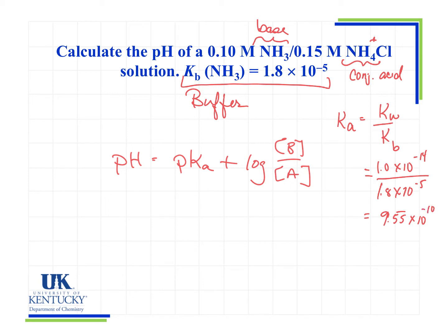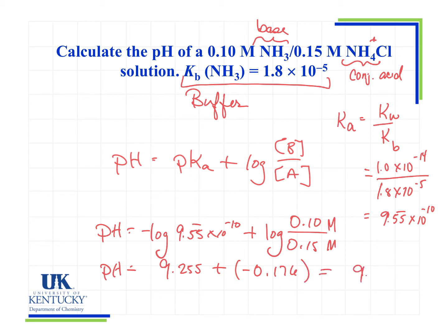There's the Ka. So now we're ready to calculate the pH. pH is pKa. That would be the negative log of that 9.55 times 10 to the minus 10 plus the log. Now which one was the base? The base was the NH3. And it's 0.10 divided by 0.15. Those are the concentrations. And that will give me a pH equal to 9.255 plus negative 0.176. And this will give me a pH of 9.08.